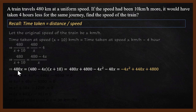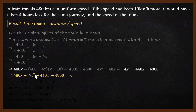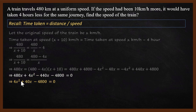Now we have 480x equals minus 4x squared plus 440x plus 4800. We bring all terms to the left-hand side, so the signs change: 4x squared becomes positive, 440x becomes minus 440x, and 4800 becomes minus 4800. Simplifying 480x minus 440x gives 40x, so we have 4x squared plus 40x minus 4800 equals 0.